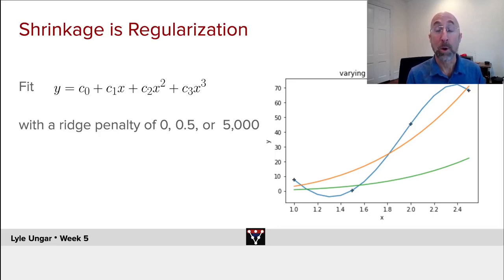The blue line: no regularization, no shrinkage, bigger parameters, high variance. Each set of four points you fit gives a very different model, but low bias. You fit them perfectly.